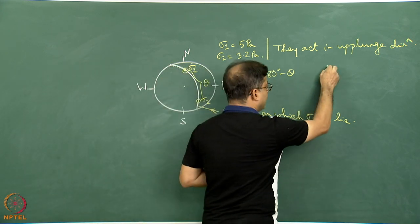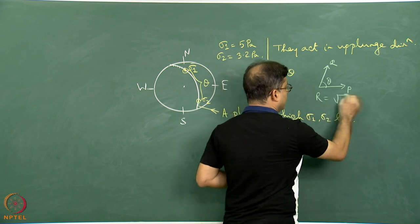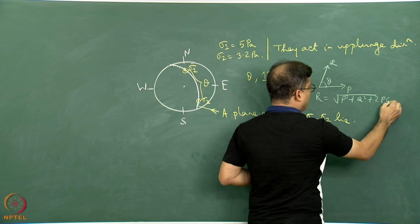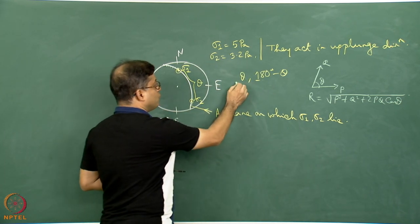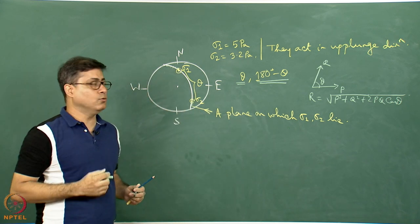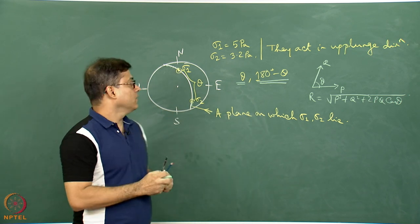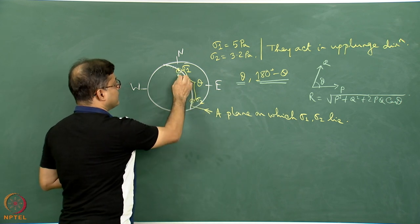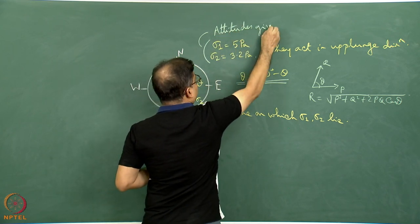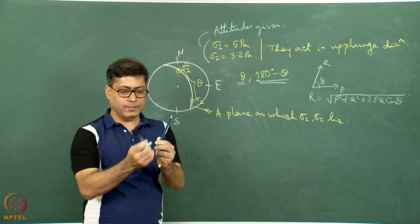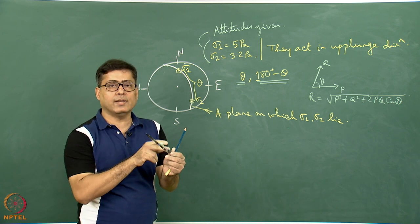From the school formula, the resultant R equals the square root of P squared plus Q squared plus 2PQ cos theta. We must choose between theta and 180° minus theta. To decide which angle to use, place two pencils or a pen and pencil oriented according to the given plunge and trend values of sigma 1 and sigma 2, and physically observe whether the angle between them is acute or obtuse.